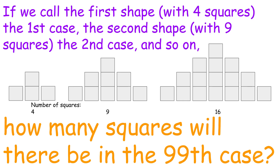Here's a question. If we call the first shape with four squares the first case, the second shape with nine squares the second case, and so on, how many squares will there be in the 99th case? We shouldn't draw the squares case by case — that would be very tiring and unrealistic. There must be a mathematical way to solve it.